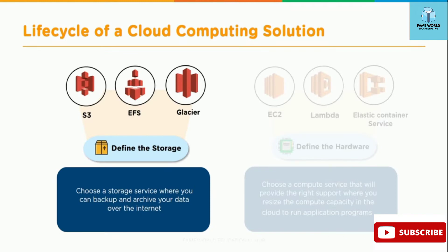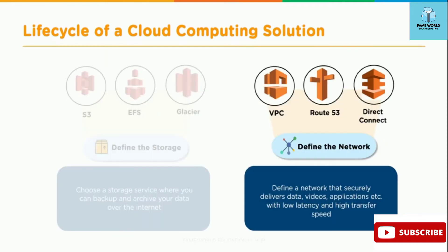The third thing is to define the storage. Choose the appropriate storage service where you can back up your data, and a separate storage service where you can archive your data, either locally within the cloud or from the internet. There is S3 separately for backup and Glacier for archival. Knowing the difference between them really helps in picking the right service for the right kind of need.